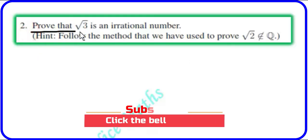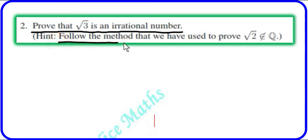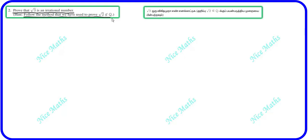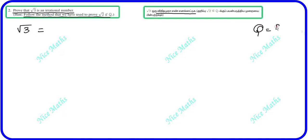Exercise 2.1 Question Number 2: Prove that root 3 is an irrational number. We will follow the method used to prove that root 2 does not belong to Q — that is, root 2 is irrational. Using that same method, we will prove that root 3 is an irrational number. Let's say root 3 is a rational number, which is in p by q format.